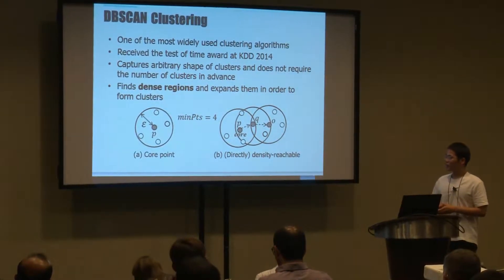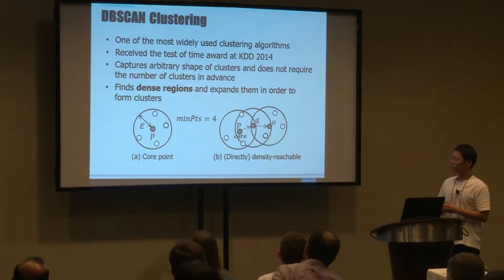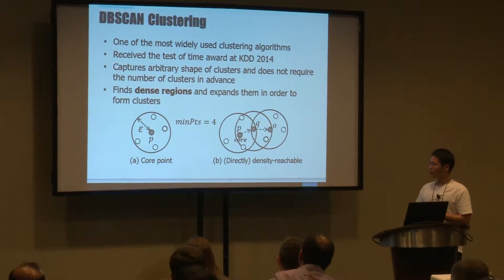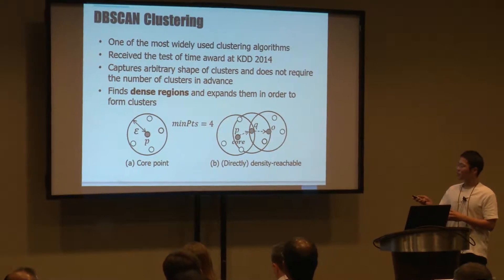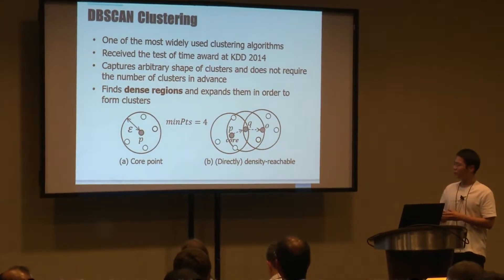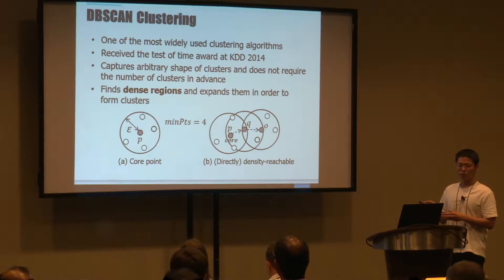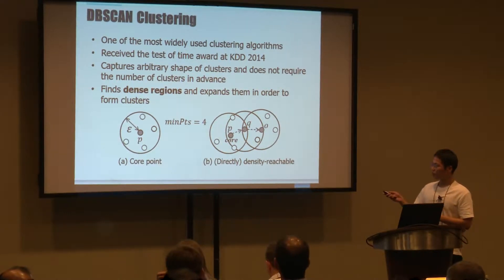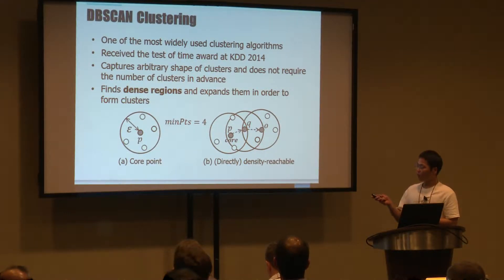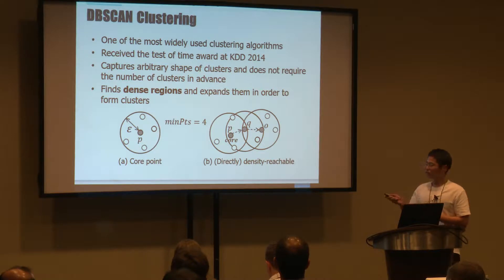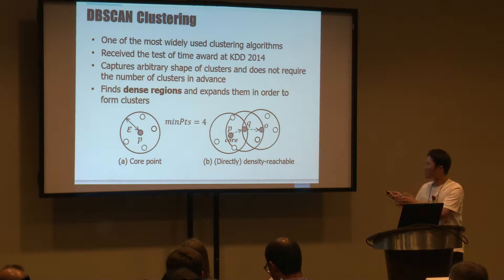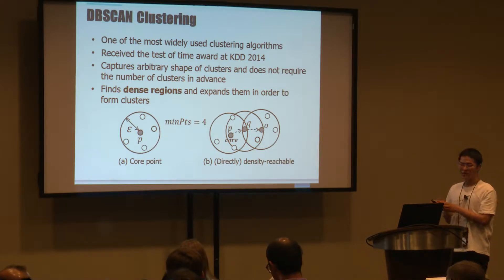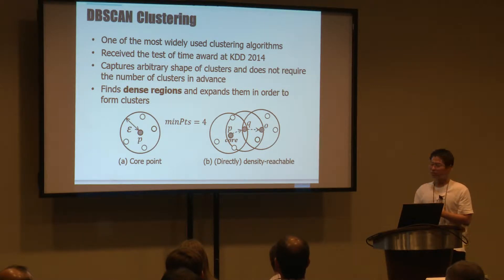The key idea is very simple. It initially finds dense regions by using the concept of core point, as in figure A. If the number of epsilon-neighboring points is larger than or equal to the MinPts parameter — here it is 4 — then we call the point P a core point. This means this region is very dense. Then DB Scan can expand such dense regions to form clusters according to the density-reachable relationship.